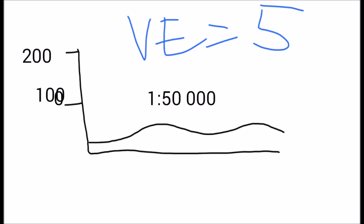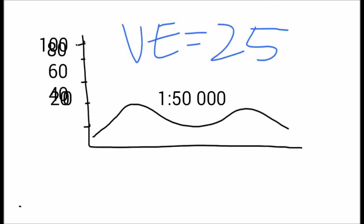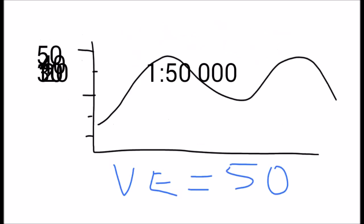So in this example, our vertical exaggeration was 5, and you can see in the cross section each vertical feature isn't quite as exaggerated as this one where the vertical exaggeration is 25, to our last one where the vertical exaggeration is 50 and the vertical features are very exaggerated in this example.